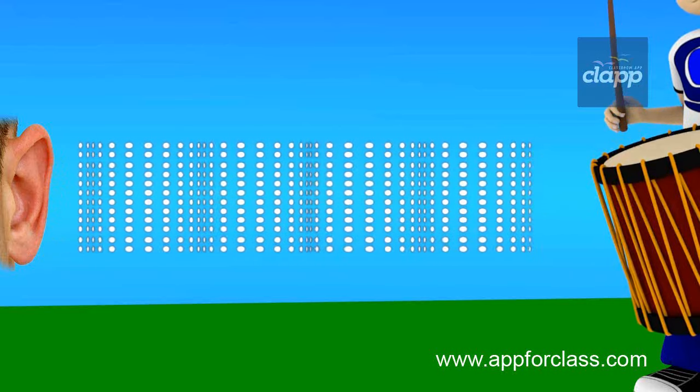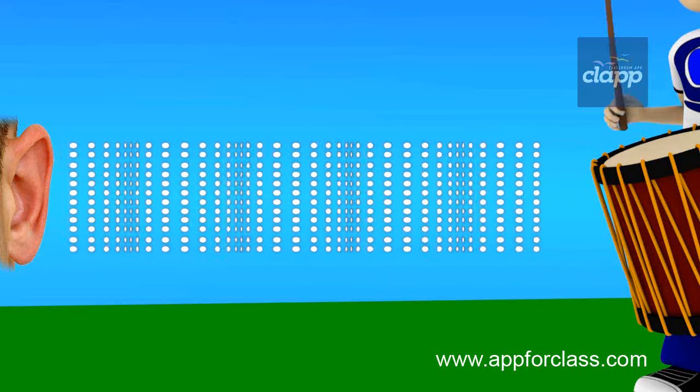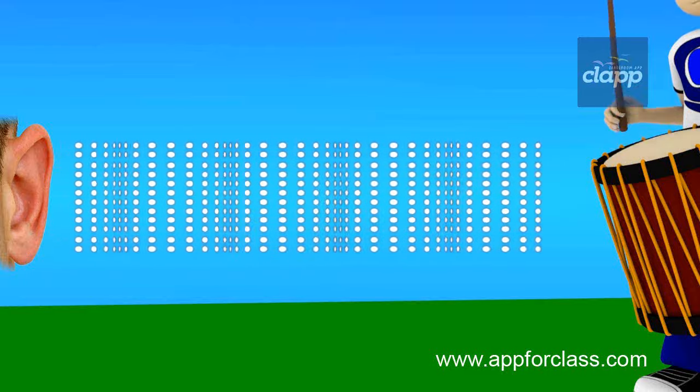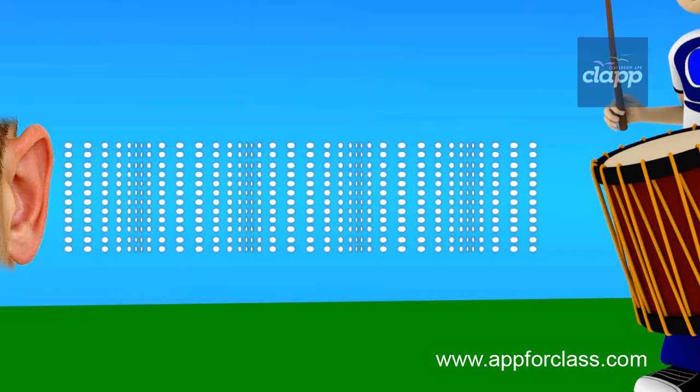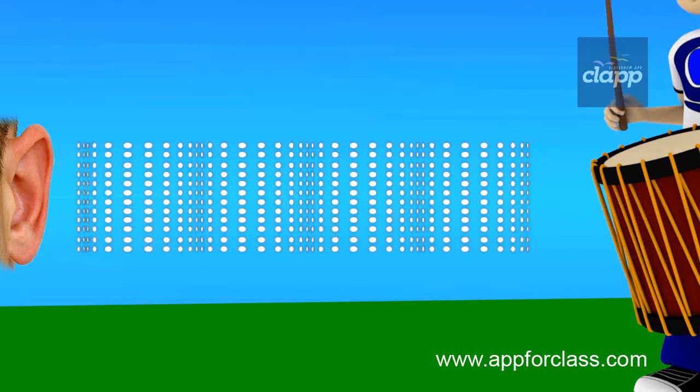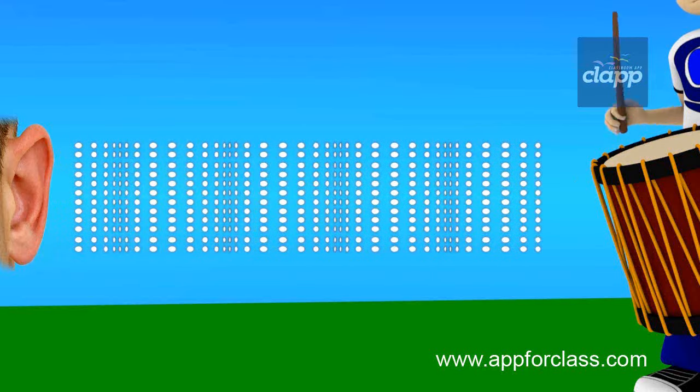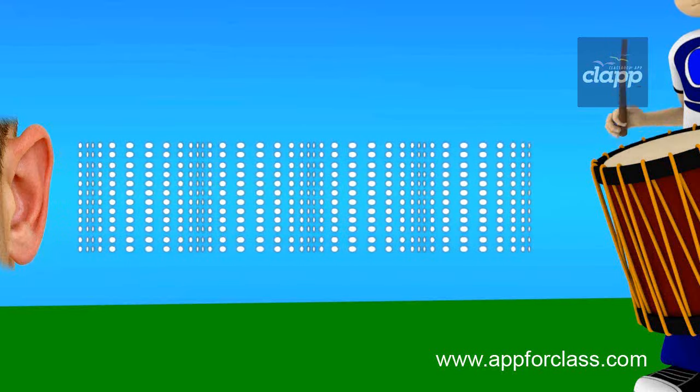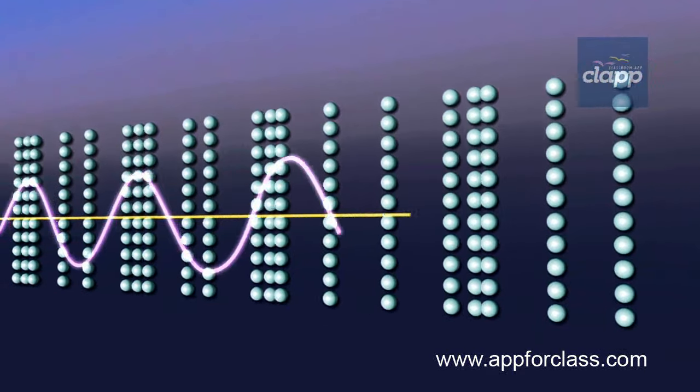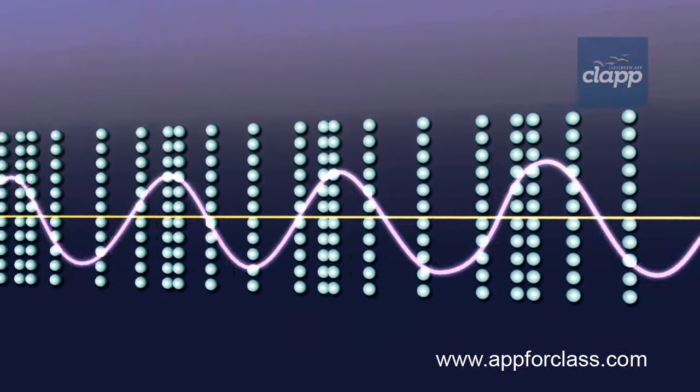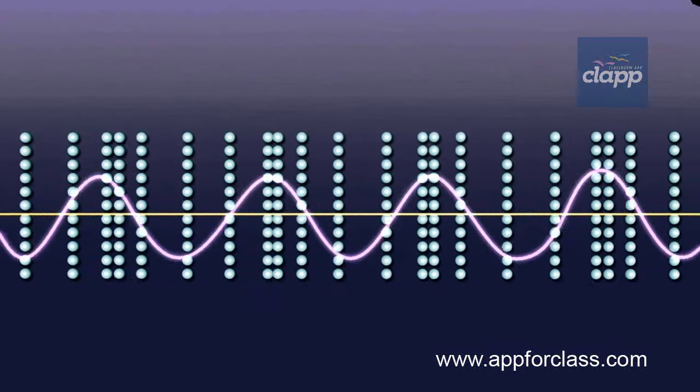This displaced air exerts a force on the adjacent particles and comes back to its main position. This process continues in the medium till the disturbance created by the vibrating object reaches our ear. Thus sound propagates through air in regions of high pressure and low pressure.